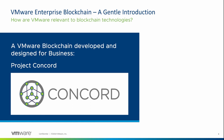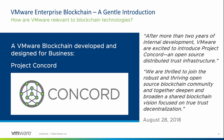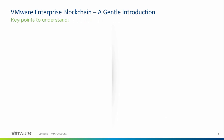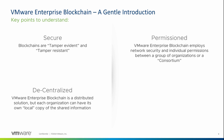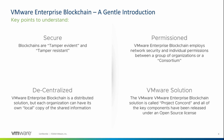VMware's blockchain designed for business is known as Project Concord. We announced Project Concord at VMworld 2018 in the US on August the 28th. This is a business-focused blockchain technology. To summarise a few key points: blockchain is secure — tamper-evident and tamper-resistant. It's decentralized — VMware's enterprise blockchain is a distributed solution, but each organisation in the consortium can have its own local copy of that information. It's permissioned — VMware Enterprise Blockchain employs network security and individual permissions between a group of organisations. And the VMware Enterprise Blockchain solution is called Project Concord, with all key components released under an open source license.